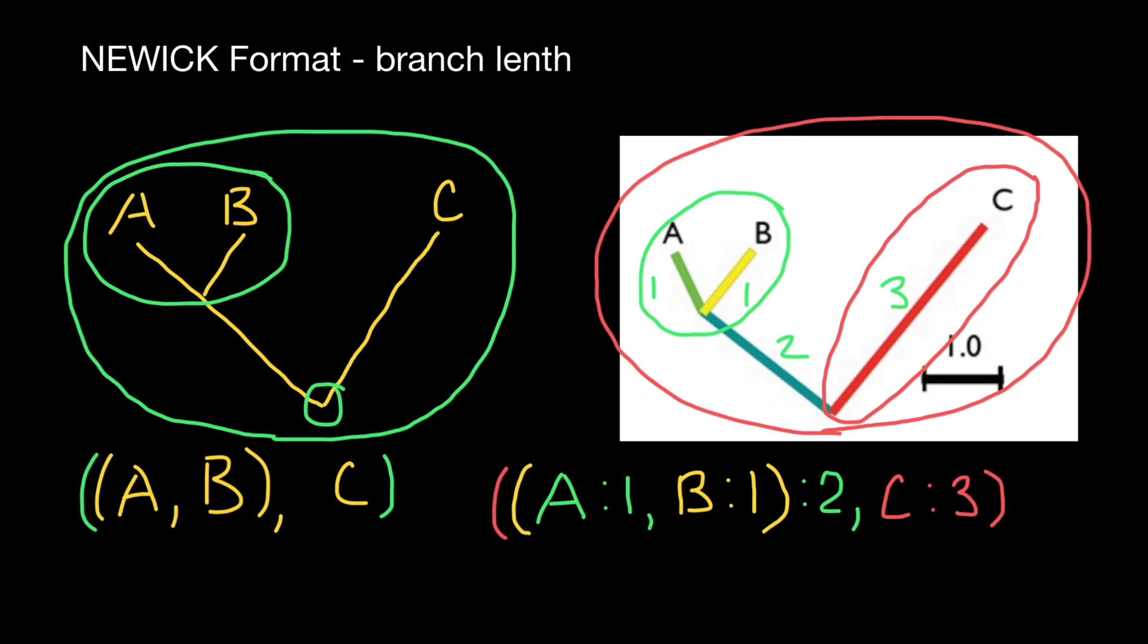Now I hope you have much better understanding how NEWICK format works. By the way, NEWICK stands for, probably some of you would wonder, for the name of the restaurant, where a group of scientists met twice in order to develop this method of description of phylogenetic trees. We also call this phylogenetic trees additive. And this is all for today. Subscribe and see you in the next video. Goodbye.